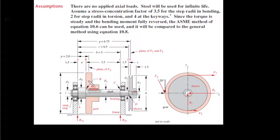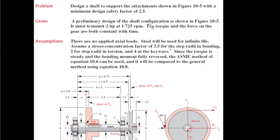The gear teeth mesh at a specific load point. This shaft has a preliminary design and must transmit two horsepower at 1725 RPM, which is a common motor speed. The torque and force on the gear are both constant with time, so we don't have fluctuating loads from the applied forces, but we will have fluctuating loads due to rotation. There are no applied axial loads. Steel will be used to obtain an endurance limit and achieve infinite life.